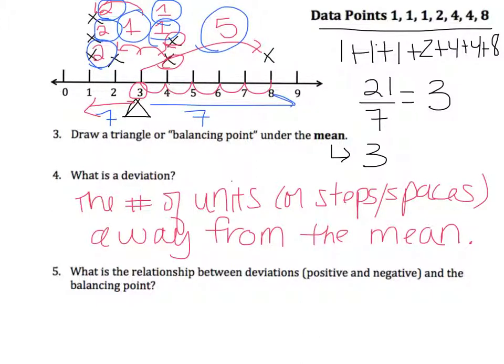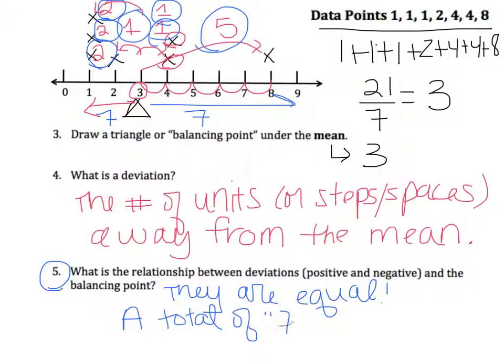I have seven deviation points to the right. So in looking at number five, what is the relationship between your deviations, positive and negative, or to the left and to the right, and the balancing point? The relationship is that they are equal. The number of deviations, the total number of deviations are equal. I have a total of seven deviations on both sides.